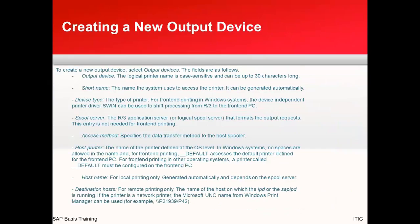Next is creating a new output device. To create a new output device, go to the T-code SPAD where you can create an output device. The different parameters you need to provide are: the logical printer name — a short name the system uses to access the printer — the device type, the spool server which is the R3 application server that formats the output request, the access method which specifies the data transfer method to the host spooler, the host printer which is the name of the printer defined at the OS level, the host name, and the destination host.